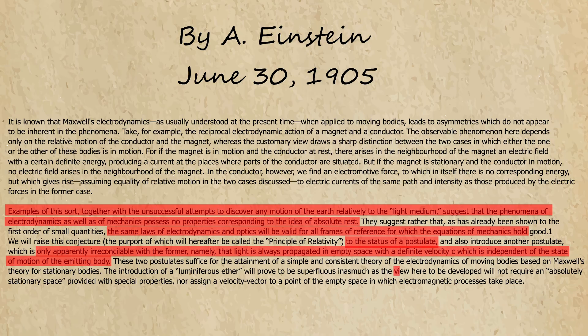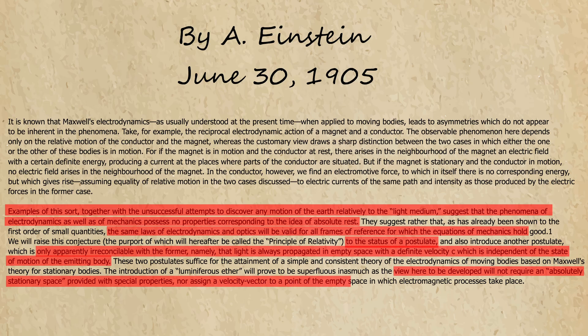Then Einstein continues in his paper saying that the view here, to be developed, will not require an absolutely stationary space provided with special properties, nor assign a velocity vector to a point of the empty space in which electromagnetic processes take place—basically saying that ether is not required in a theory he is going to propose.